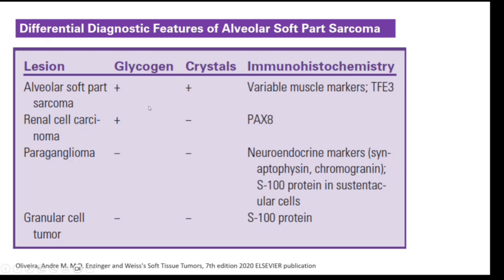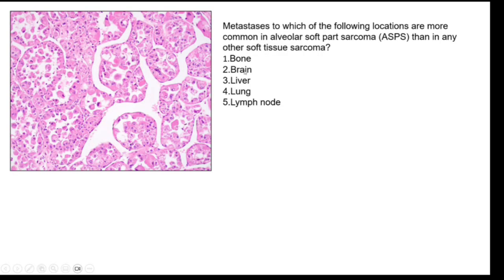The differential diagnosis of alveolar soft part sarcoma includes: RCC (which is positive for PAX8), paraganglioma (tumor cells in organoid pattern — positive for neuroendocrine markers synaptophysin and chromogranin, with sustentacular cells positive for S100), and granular cell tumor (positive for S100). An important MCQ: metastasis to the brain is more common with alveolar soft part sarcoma than any other soft tissue sarcoma.